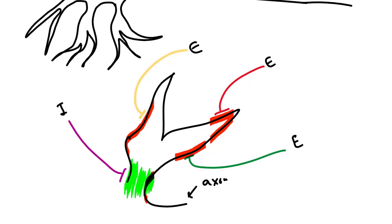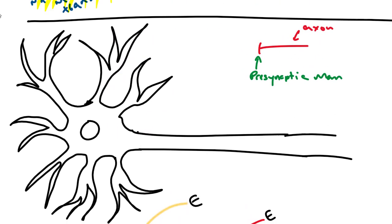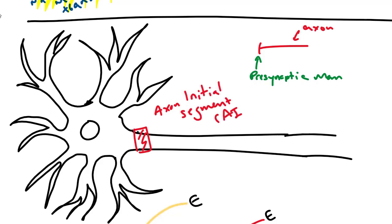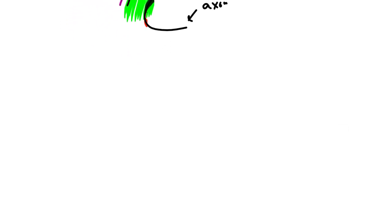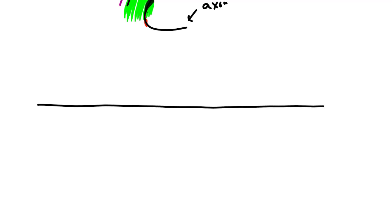I'm going to take this membrane drawn in black and sort of straighten it out, and give the beginning of the axon a name. We've been talking about this area where the action potential is initiated — this is called the Axon Initial Segment, or AIS. So we're going to straighten out this black line to make it easier to see what's happening, and here's my axon initial site somewhere here.